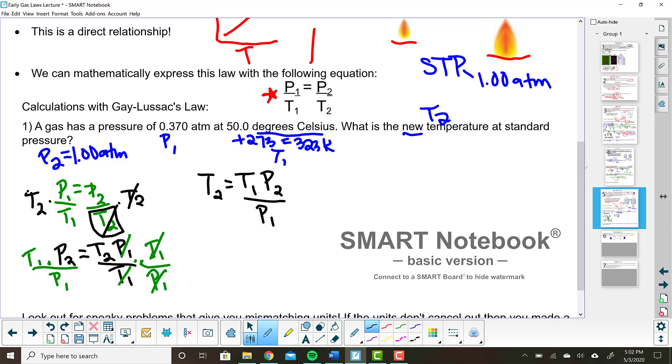Hopefully you followed that algebra. If you didn't, maybe watch again. Then just refresh some of your algebra things. I'd be happy to talk it over with you on Zoom as well. But ultimately you come to this formula here that T2 equals T1 times P2 over P1. And now we just need to plug into the equation. We know that T1 in Kelvin is 323 Kelvin times P2. That's our standard pressure, the 1.00 atmospheres. And P1 is 0.370.